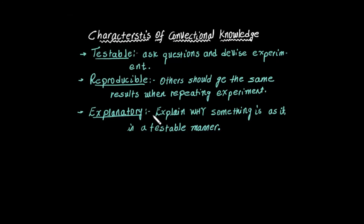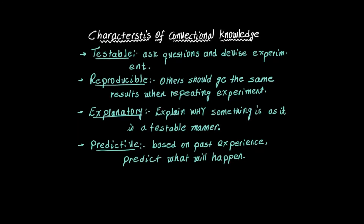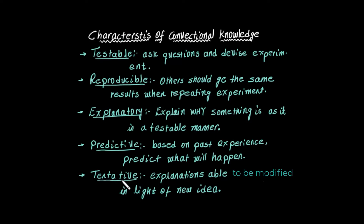Conventional knowledge is predictive, based on past experience. It is also tentative — meaning it is an explanation able to be modified in light of new ideas. The characteristics of conventional knowledge are: testable, reproducible, explanatory, predictive, and tentative.